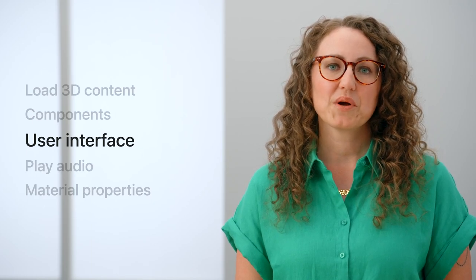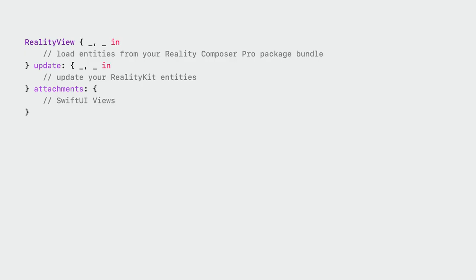We have a new way of putting SwiftUI content into a RealityKit scene. This is called the Attachments API. We're going to combine attachments with our Point of Interest component to create hovering buttons with custom data at runtime. Let's first see this in code, and then I'll walk you through the data flow. Attachments are a part of the RealityView. Let's first look at a simplified example to show the structure of a RealityView, so we can see how SwiftUI views get into a RealityKit scene.